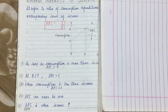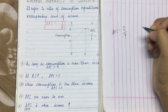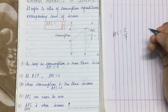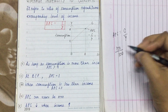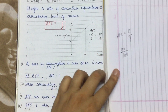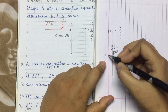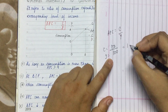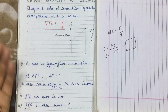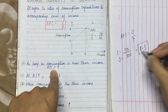Let's understand this mathematically. The formula of APC is C upon Y. Suppose my income is 100 and my consumption is 150 — consumption is more than income. When you solve it: 150 divided by 100 equals 1.5. So you can see for yourself — this is proof that when consumption is more than income, APC is more than 1. It is 1.5, which is greater than 1.